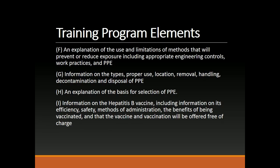Additional training program elements include: an explanation of the use and limitations of methods that will prevent or reduce exposure, including appropriate engineering controls, work practices, and PPE; information on the types, proper use, location, removal, handling, decontamination, and disposal of PPE; an explanation of the basis for selection of PPE; and information on the Hepatitis B vaccine, including its efficiency, safety, methods of administration, the benefits of being vaccinated, and that the vaccine and vaccination will be offered free of charge.